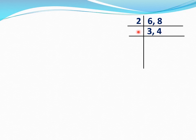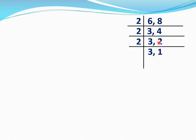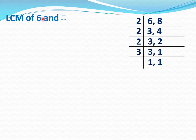4 is divisible by 2, so write 2 here. This 3 is not divisible by 2, so write 3 as it is. This 4 is divisible by 2: 2 multiply 2 equal 4. Now factorize 3 and 2. This 2 is divisible by 2, write 2 here. 3 as it is. 2 multiply 1 equal 2. This 3 is divisible by 3, write 3 here. 3 multiply 1 equal 3 and 1 as it is. LCM of 6 and 8 equal 2 multiply 2 multiply 2 multiply 3 equal 24.